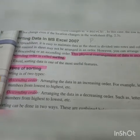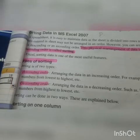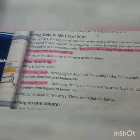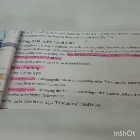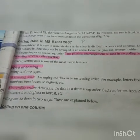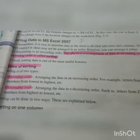The physical arrangement of data in ascending or descending order is called sorting. In Excel, sorting data is one of the most useful features. Types of sorting: sorting is of two types — ascending order and descending order. Ascending order: arranging data in an increasing order, for example letters from A to Z or numbers from lowest to highest. Descending order: arranging data in a decreasing order, such as letters from Z to A or numbers from highest to lowest.